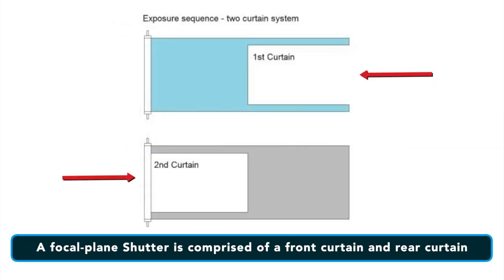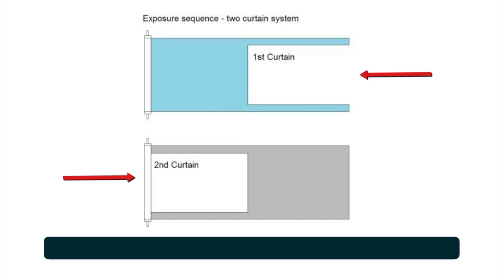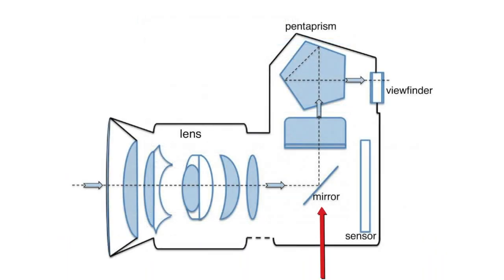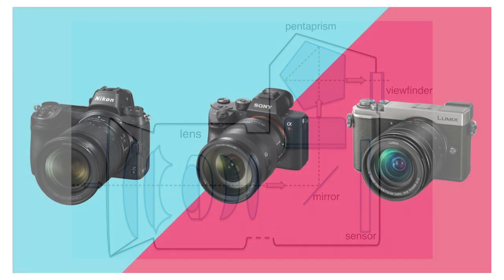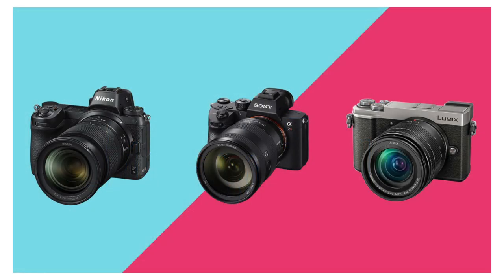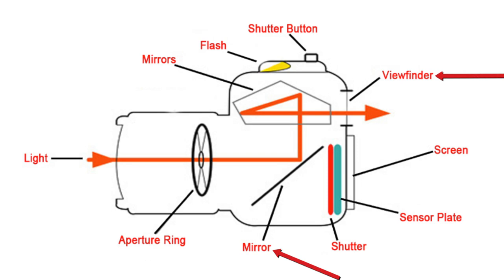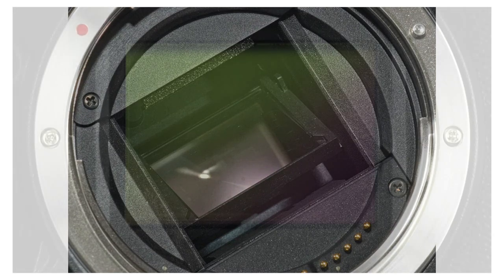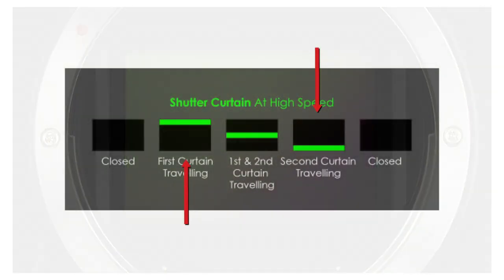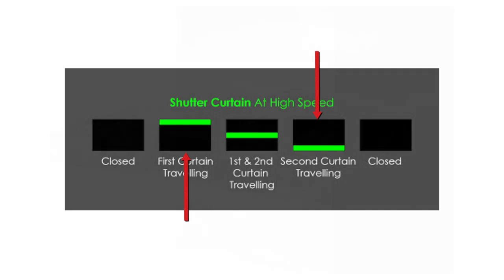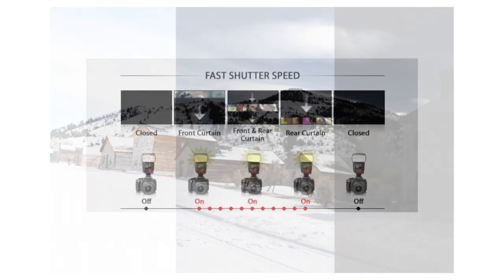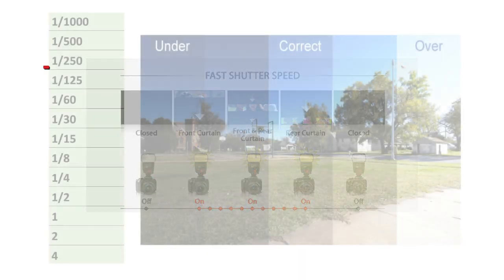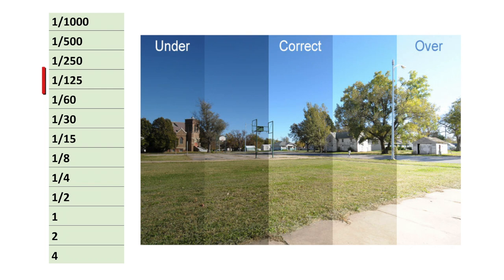A focal plane shutter is comprised of a front curtain and a rear curtain. The curtains are separate from the mirror, which is commonly mistaken as the shutter and is in DSLR and film cameras, but not in mirrorless cameras. The mirror reflects the lens image into the viewfinder and moves out of the way before the shutter exposes the film. While one curtain can do the job for most exposures, two curtains are required for fast exposures — the mechanics aren't fast enough with a single curtain.